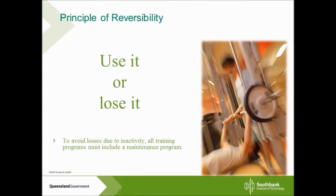The last principle is the principle of reversibility — essentially the use-it-or-lose-it principle. As soon as you stop exercising, your body adapts to that new lower level of stimulus: no stimulus means it doesn't need as much muscle mass, fitness, or flexibility, so you start to lose those facets you've built up. When changing how we train a client, we need to try to maintain all the facets of fitness we've built. How quickly we lose these things generally depends on how long we've had them — the longer you've had a high level of fitness, the more the body tries to hold on to it. The key is maintaining everything we've built and avoiding long periods of inactivity.